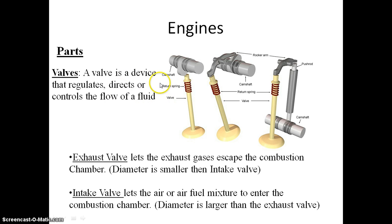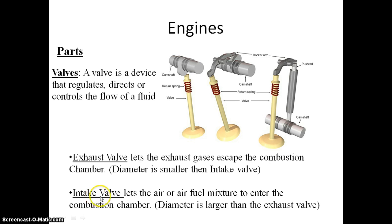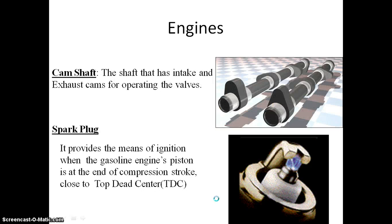The arrangement of the valve may be in any orientation. This valve is of two types: the exhaust valve and the intake valve. As the name suggests, the exhaust valve is the one through which exhaust gas escapes outside the cylinder. The intake valve is the one through which air or the air-fuel mixture comes inside the cylinder.